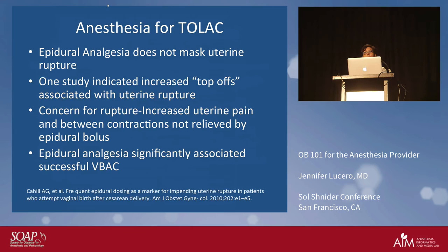Our role as anesthesiologists includes being available for emergent delivery in case of uterine rupture, and providing epidural analgesia — which has been associated with higher VBAC success. Epidural analgesia does not mask uterine rupture, but signs associated with rupture or wound dehiscence include increased epidural top-off requests and uterine pain between contractions not relieved by epidural boluses. We've had patients with that presentation and found small areas of dehiscence on delivery.